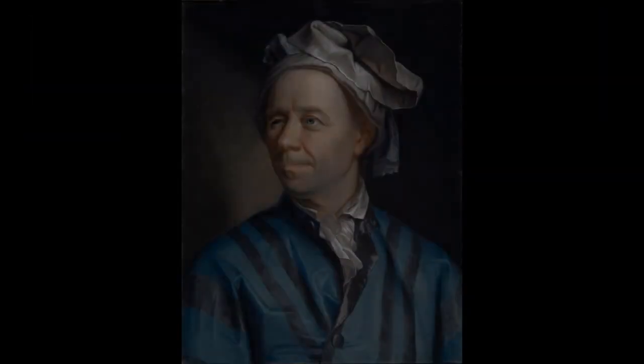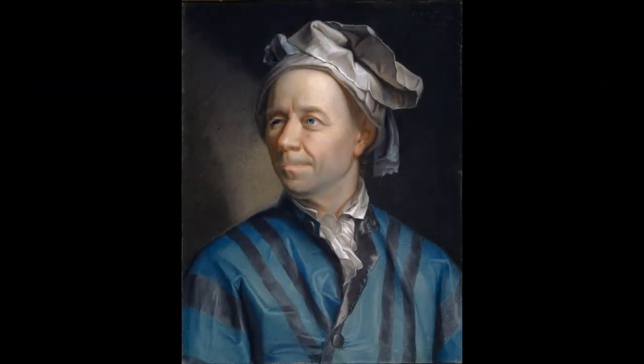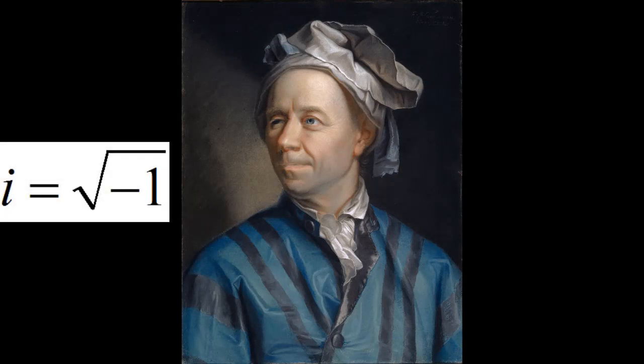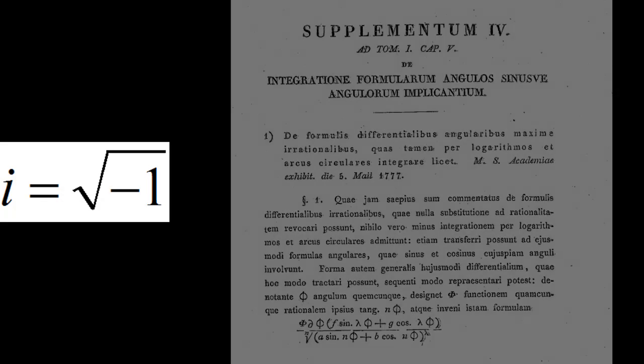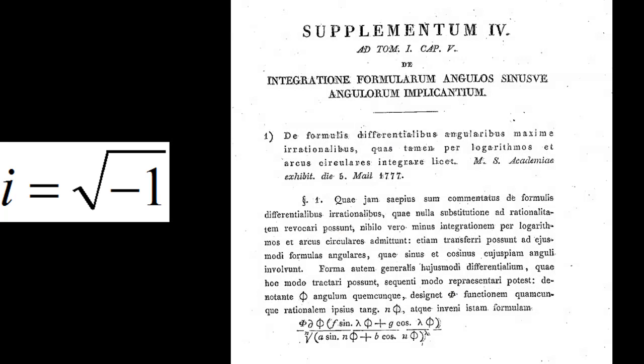In the 18th century, Leonard Euler, a Swiss mathematician considered by many to be the most prolific mathematician to ever exist, coined i for the square root of negative one in a 1770 paper, roughly translated to, on differential, angular, most irrational, which is logarithms and circular arcs can be integrated.